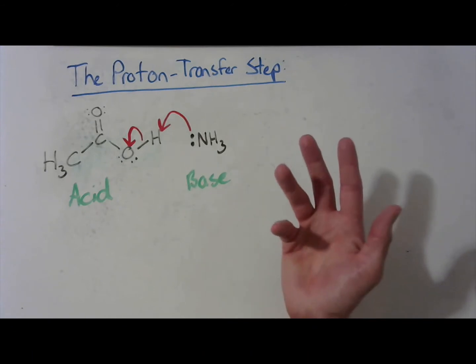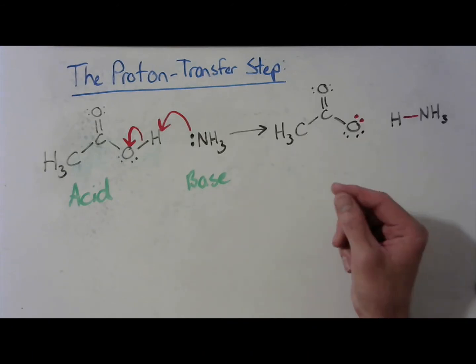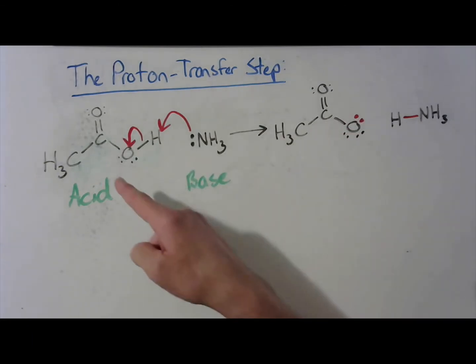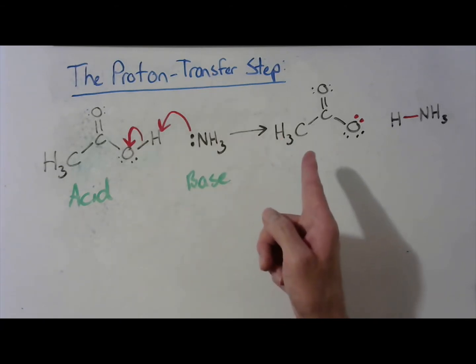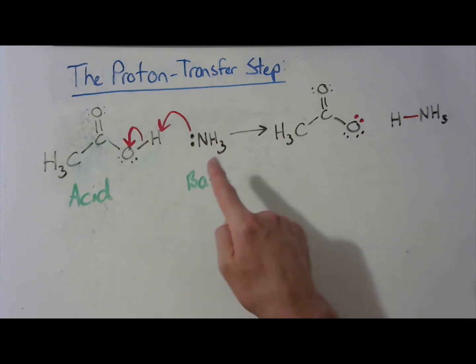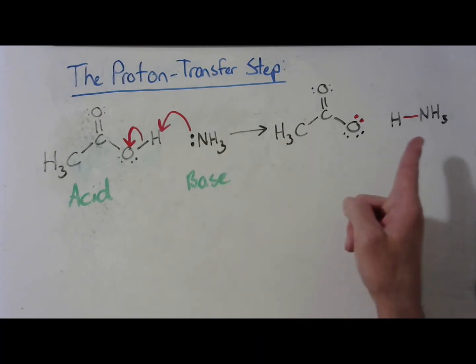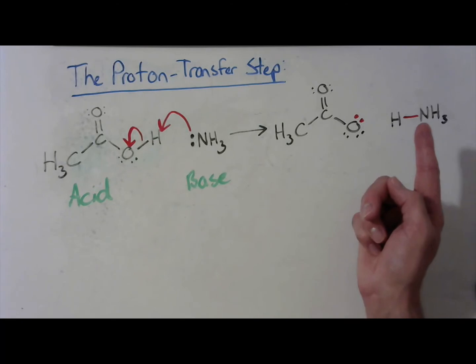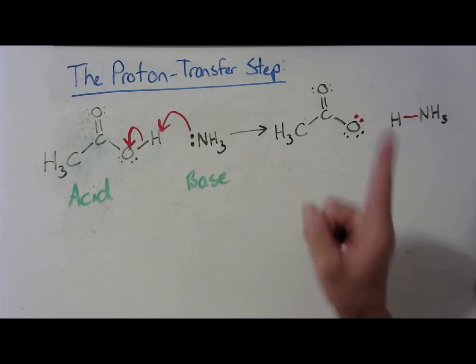So where does this get us? There we go. So now we've got this molecule here, the deprotonated form of our acid. This is acetic acid. This is acetate. We've got the protonated form of our base. This is ammonia. This is ammonium. Now, because we changed the order of some bonds and some lone pairs on this oxygen atom and this nitrogen atom here, we need to recalculate formal charges because they probably changed.